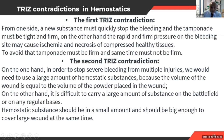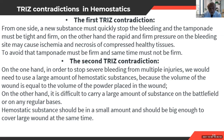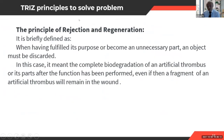The second TRIZ contradiction: to stop severe bleeding from multiple injuries, you would need a large amount of hemostatic substance — the volume of the wound equals the volume of powder placed in it. On the other hand, it is difficult to carry large amounts on a battlefield or in any emergency situation. So the substance has to be a small amount yet still cover the wound and stop the bleeding.